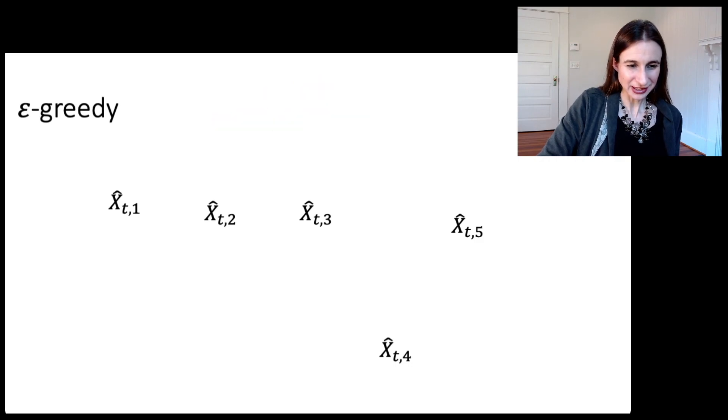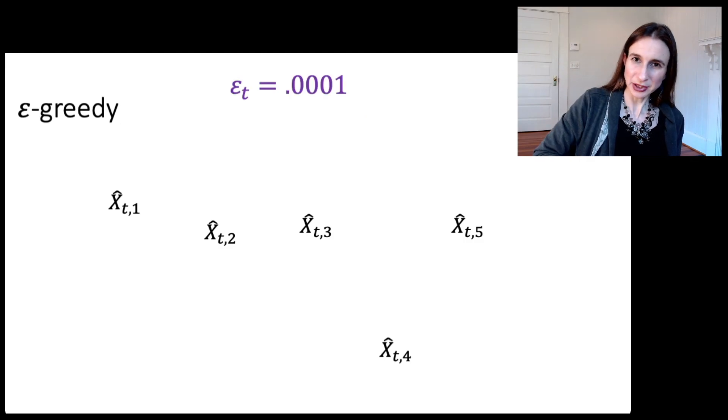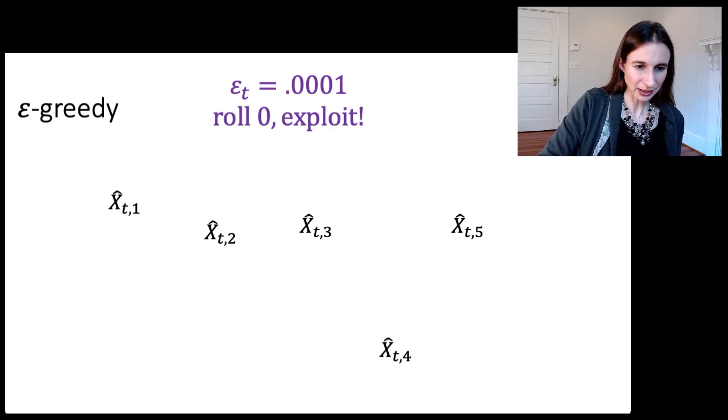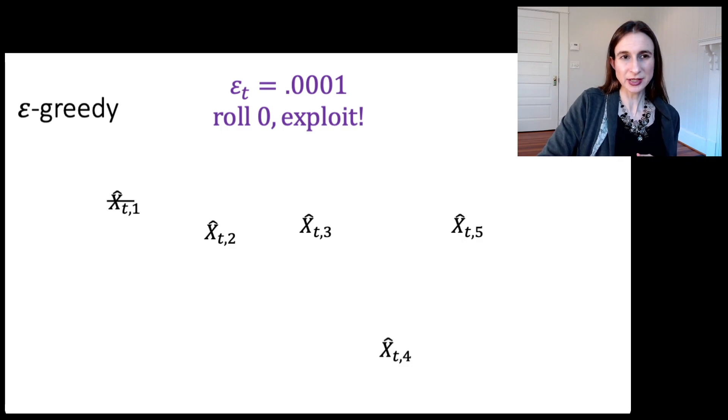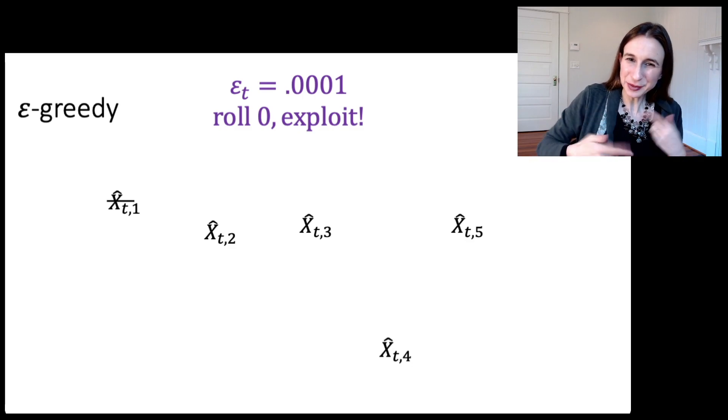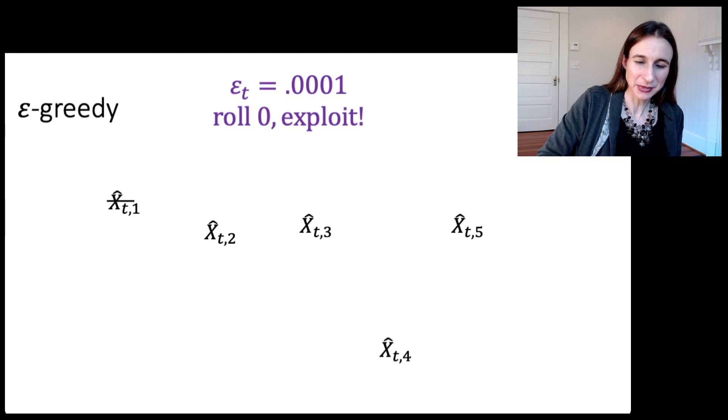So again, I continue doing this. And after a while, the epsilons are going to get really, really small. And your probability of exploring is going to get very, very low. So here, I pretty much always end up exploiting. So here I roll a zero and I exploit. So I'm going to choose arm one. And its mean reward is essentially right on top of what I estimated. Because of course, I've already played many, many rounds of this game. And so I have a very good estimate of arm one's mean reward.